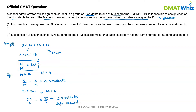The rephrased question is: is n over m an integer? Now let's move on to the statements. Statement 1 tells us that it is possible to assign each of the 3n students to one of the m classrooms so that each classroom has the same number of students assigned to it. This basically means that 3n over m is an integer.